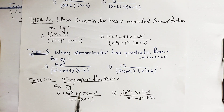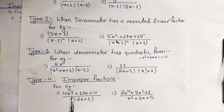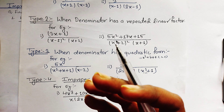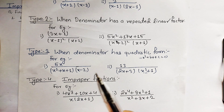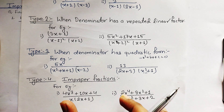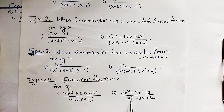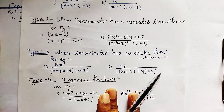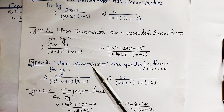The fourth type is when we have an improper fraction. In the numerator, the highest power of x is 3, while in the denominator the highest power of x is only 2. When the variable has a higher degree in the numerator than in the denominator, such a fraction is called an improper fraction. In the second problem, the power of x in the numerator is 4 and in the denominator it is 2. These problems are different from what we learned previously, so let's get started.